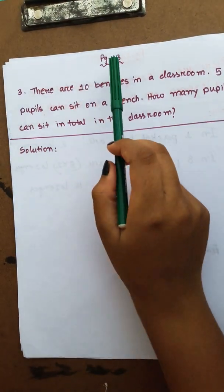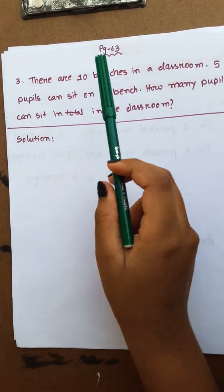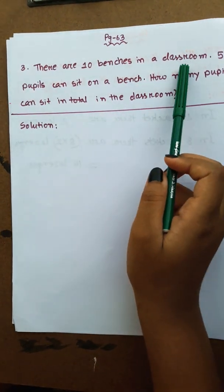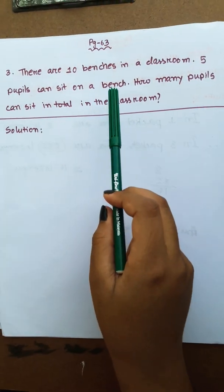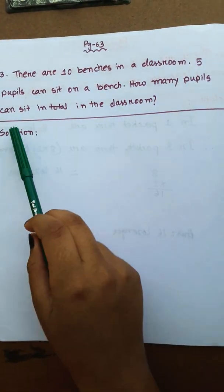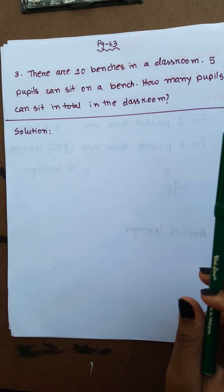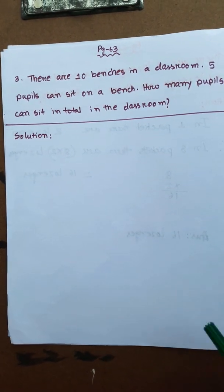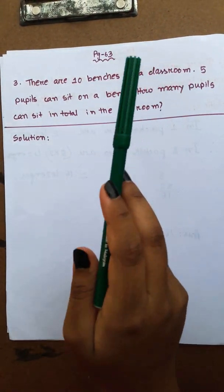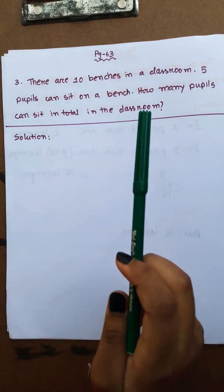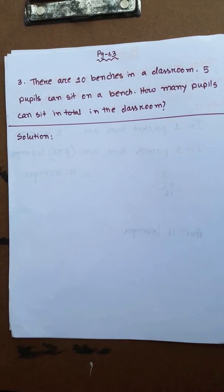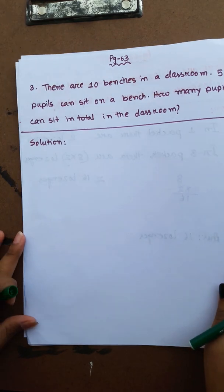The next math is page number 63, question 3. There are 10 benches in a classroom. 5 pupils can sit on a bench. How many pupils can sit in total in the classroom? In the classroom, each bench seats 5 students.